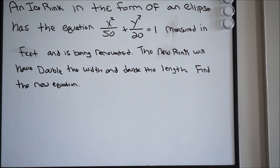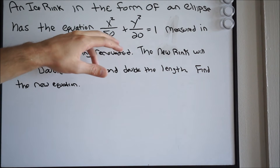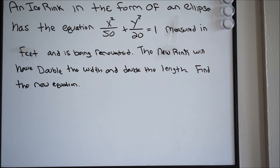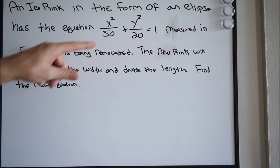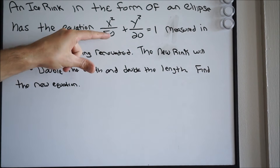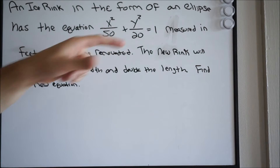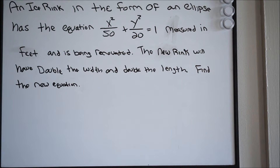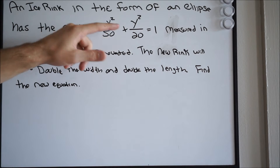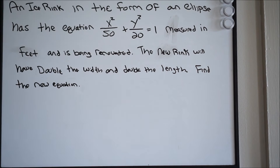We determine that by looking at our equation — in particular our denominators — and which one is the bigger of the two. Is 50 bigger than 20? Yes it is. So that tells me that 50 is going to be my a squared value and 20 is going to be my b squared value. Remember, the bigger of the two values will always be your a squared value. And since my a squared value is underneath my x, this tells me I'm dealing with a horizontal ellipse.